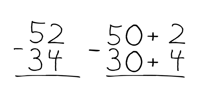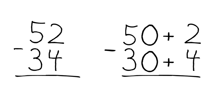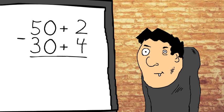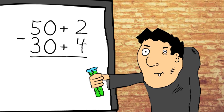Now I'm going to start with the ones place and subtract them. What about the two? You can't take four things away from two.